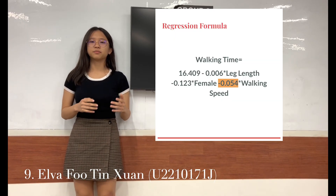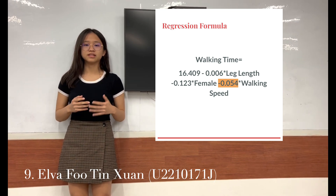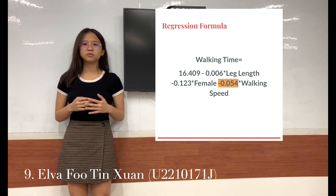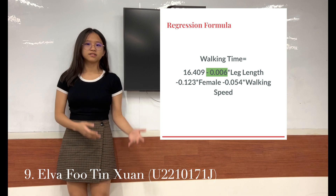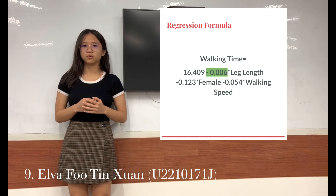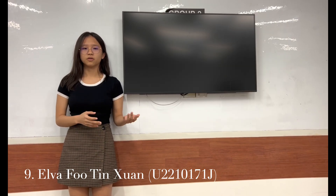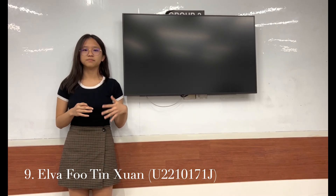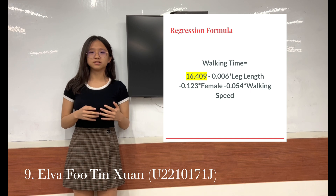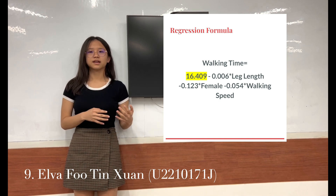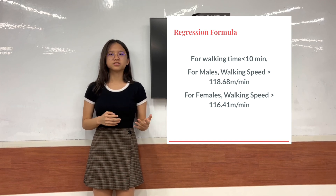The coefficient of walking speed is only negative 1.05377. This means that for every 1 metre per minute increase in walking speed, walking time only decreases by 3 seconds. Even with an additional centimetre added to leg length, there is less than 1 second decrease in walking time. Females take 6 seconds less to walk on average compared to males. The intercept B0 is 16.4, meaning when all other factors are zero and the person is male, walking time will be 16.4 minutes. Hence, even if you walk faster, it won't make much difference.